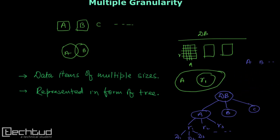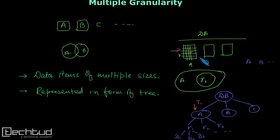Let's say a transaction locks table a. When transaction t1 locks table a, it simply means that the lower levels — whatever is inside this table, the records and the data — are all locked. So if I lock the table itself, everything inside is locked. The key rule: when a node is locked, all the children are automatically locked.